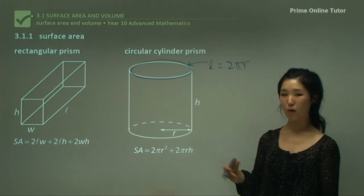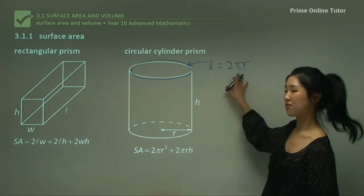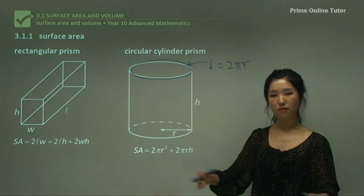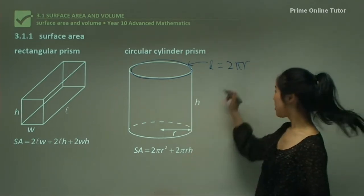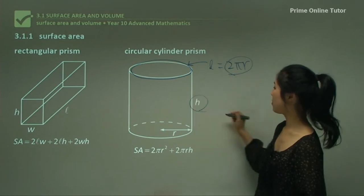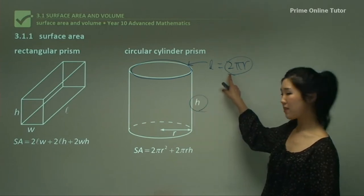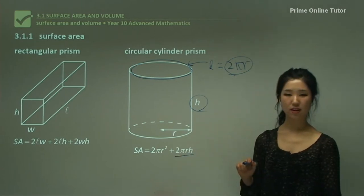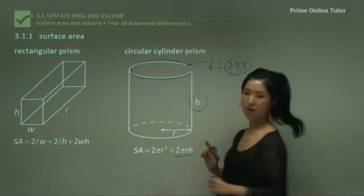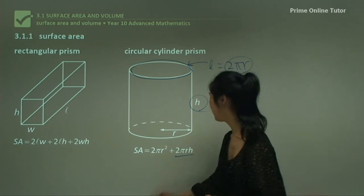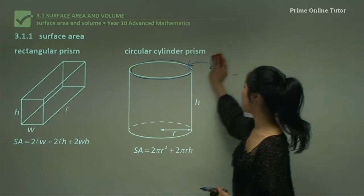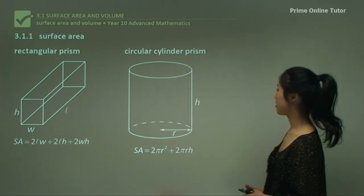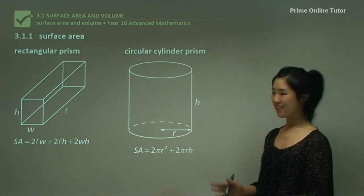Make sure you memorize the circumference formula 2πr. The area of the rectangle is length times width — 2πr is our length, h is our width — so together we get 2πrh. That's why we have 2πrh here, and then we add it to the two circles. You can memorize it, but you don't really need to, because you can determine it by looking at the diagram.